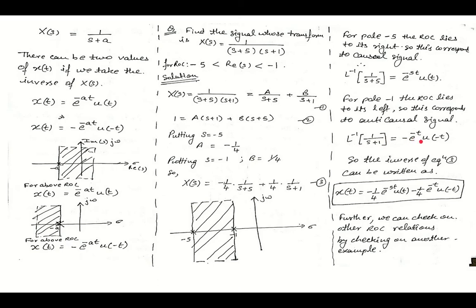Therefore the complete inverse is x(t) = (-1/4)·e^(-5t)·u(t), and since we have a positive sign for the second term but the inverse for the left-side ROC carries a negative, we get minus (1/4)·(-e^(-t)·u(-t)), which simplifies to x(t) = (-1/4)·e^(-5t)·u(t) + (1/4)·e^(-t)·u(-t).